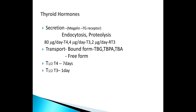Thyroid hormone secretion occurs by the process of endocytosis or proteolysis. T4 is around 80 micrograms per day and T3 is 4 micrograms, with reverse T3 being 2 micrograms. They are almost entirely transported in the bound form to thyroid binding globulin; only a few percent is free. The half-life of T4 is 7 days, whereas the half-life of T3 is 1 day.